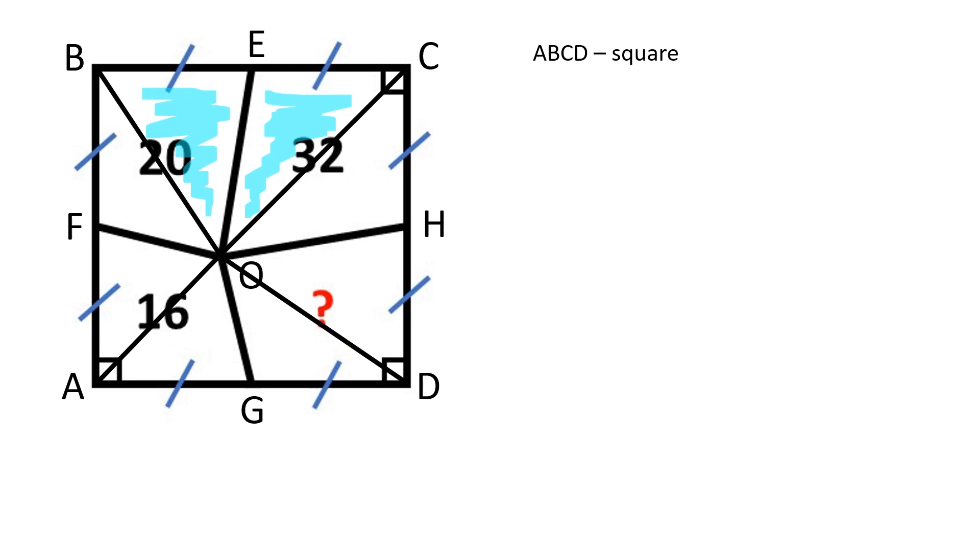By the same principle, the two pink triangles have equal areas, the two green triangles have equal areas, and the two yellow triangles have equal areas.